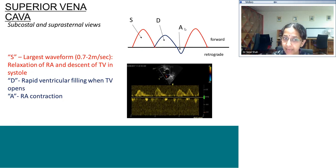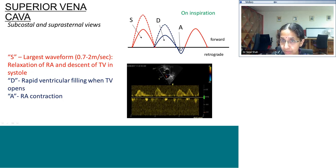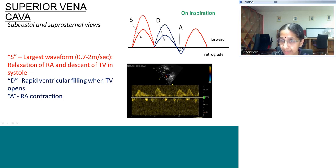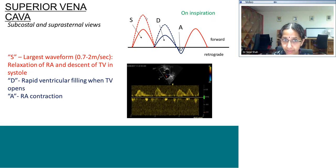Remember that right heart structures show changes during respiration. On inspiration, the S wave velocity increases, the D wave velocity increases, and the A wave velocity reduces, due to changes in intrathoracic pressure affecting venous return. To find a representative velocity, consider the mean overall. Usually the S wave peak is around 1 meter per second but can go up to 2 meters per second. This is the superior vena cava Doppler.